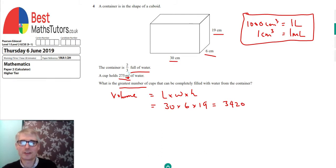We're told the container is two-thirds full of water. The amount of water we have is 3420 centimetres cubed. Since we're working in millilitres, and one centimetre cubed equals one millilitre, that's 3420 millilitres. But we need to find two-thirds of it to find the total amount of water.